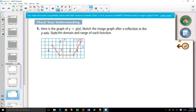So here we've got a graph of g of x. It's just a random graph. The graph's already been given to you. And you're asked to sketch the image after reflection in the y-axis.